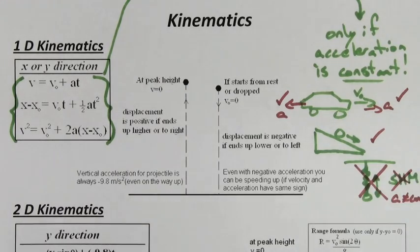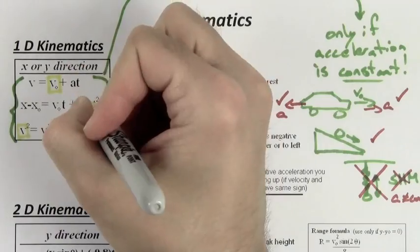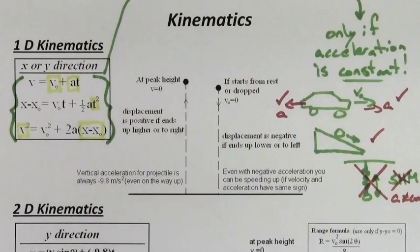For a simple harmonic oscillator, the acceleration's not constant, so don't use these formulas. X minus X knot is the displacement. V knot is the initial velocity, V is the velocity at time t, and a is the acceleration.